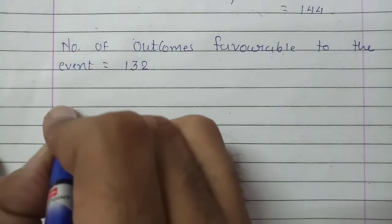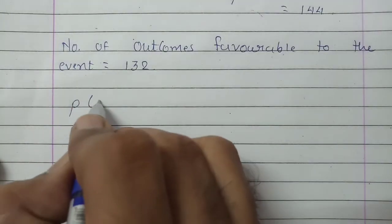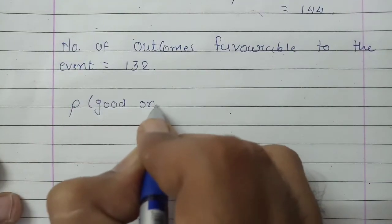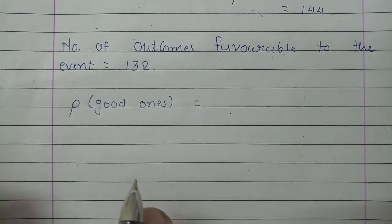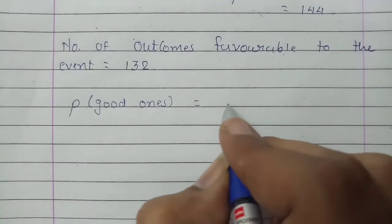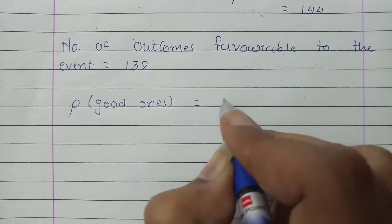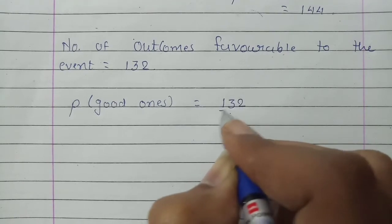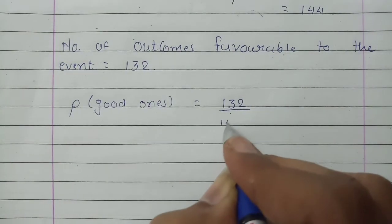Now let us find the probability. The probability that the pen taken out is a good one equals the number of outcomes favorable to the event — which is 132 — divided by the total number of outcomes, which is 144.